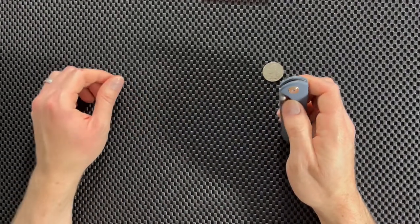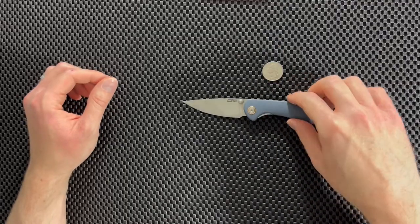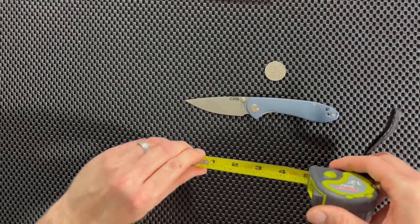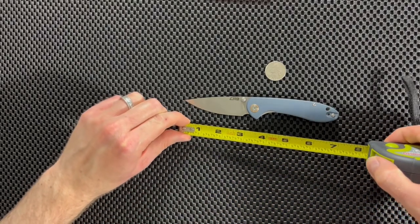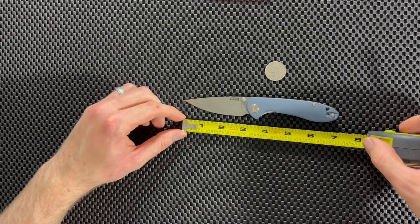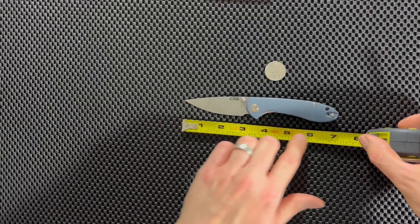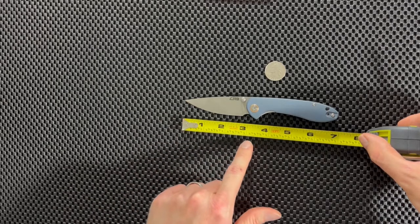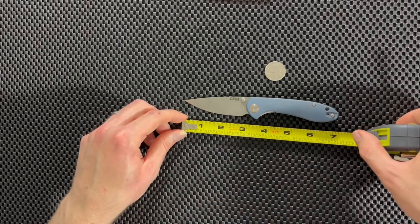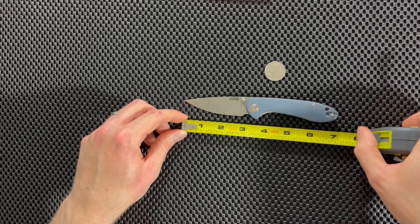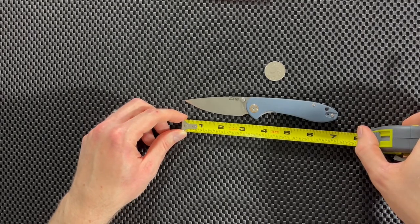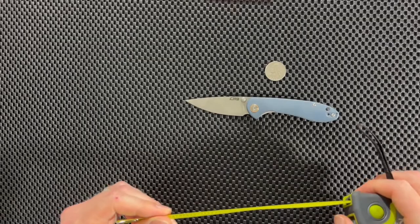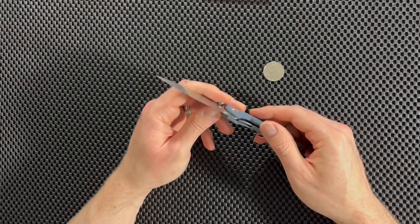All right. So the next thing we'll get to is the size. Now I already showed you it in relation to the quarter, but let's measure it out with the tape measure and let's see what we get. All right. So you can see there almost an overall length of almost seven inches, blade length three inches, maybe a little bit less. It's a great size, not super compact, but I think it's a great size for everyday carry. And this knife does carry comfortably. I carry it all the time and I wouldn't do that unless it was comfortable to carry around.